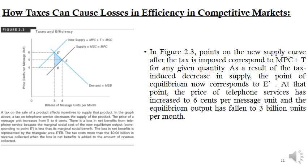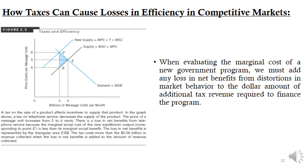As a result of the tax-induced decrease in supply, the new equilibrium corresponds to point E'. At that point, the price of telephone services increases to 6 cents per message unit, and the equilibrium output falls to 3 billion units per month. The government collects a total of $0.06 billion per month in tax revenue, equal to the 2-cent-per-unit tax multiplied by the 3 billion message units sold per month after the tax is imposed.